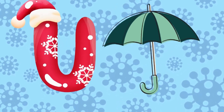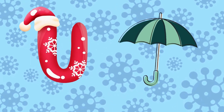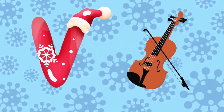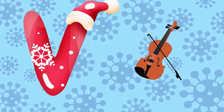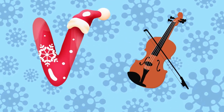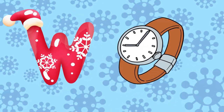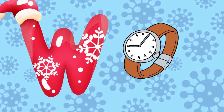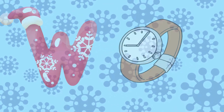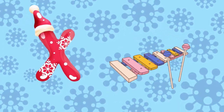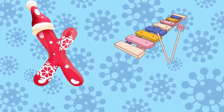U is for umbrella, u-u-umbrella. V is for violin, v-v-violin. W is for watch, w-w-watch. X is for xylophone, z-z-xylophone.